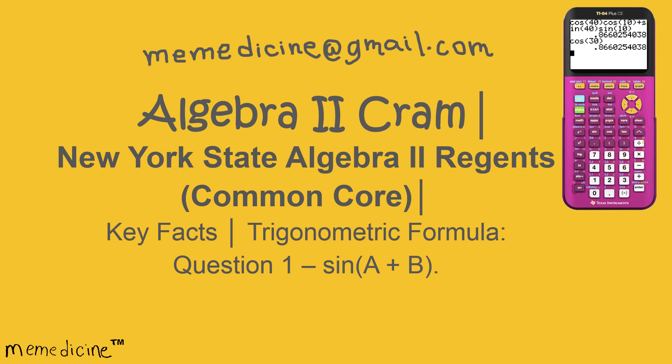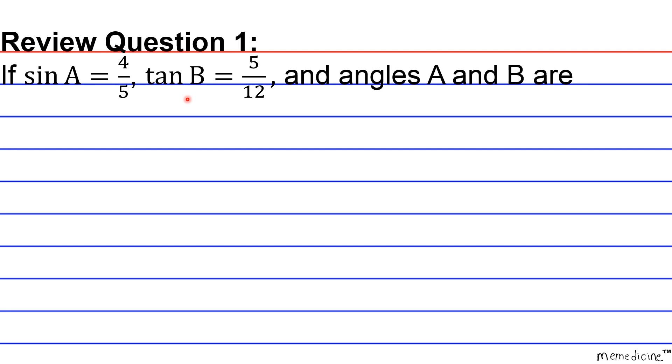Alright, let's delve into the problem. Review Question 1. If the sine of A is equivalent to 4 over 5 and the tangent of B is equivalent to 5 over 12 and angles A and B are in quadrant 1, what is the value of the sine of A plus B?